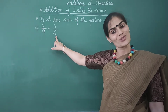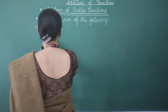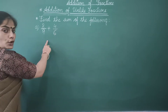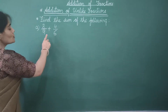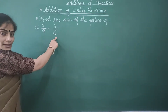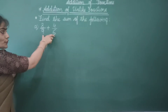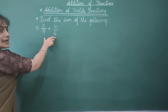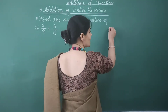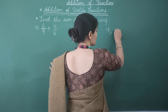So let's begin with this question. We are asked to find the sum of the following. Since these are unlike fractions, we first need to find the LCM of their denominators, 9 and 6.